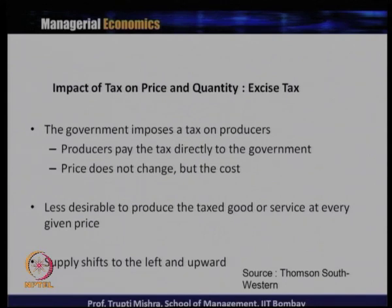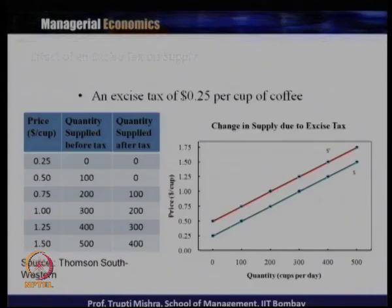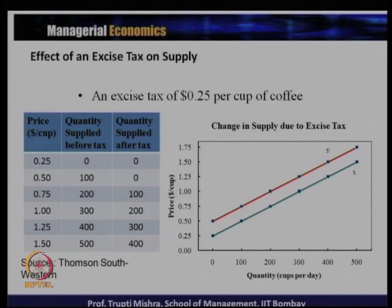Then the government imposes tax on the producer — that is the excise tax. The producer pays the tax directly to the government. Price does not change, but the cost changes because they are paying a tax. It is less desirable to produce taxed goods or services at every given price, so supply shifts to the left and upward. Due to the imposition of excise tax, that leads to a decrease in supply and a shift in the supply curve from S to S-dash. Suppose there is an excise tax of $0.25 per cup of coffee — that leads to a change in quantity supplied before and after, resulting in a decrease in quantity supplied. Graphically, the change in quantity supplied is represented by the movement from S to S-dash.